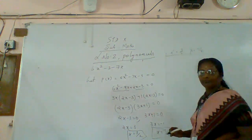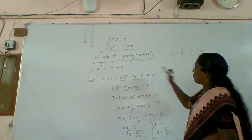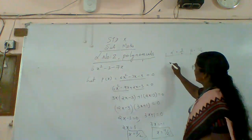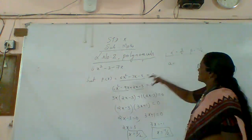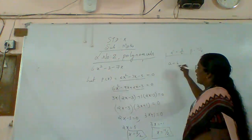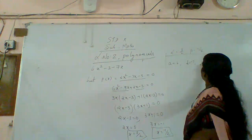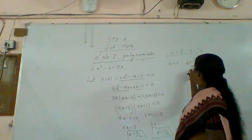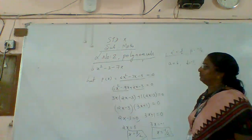From this equation we will find the coefficients. A is the coefficient of x square, that is six. B is the coefficient of x, that is minus seven. And c is the constant term, that is minus three.